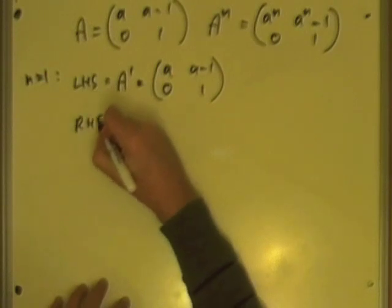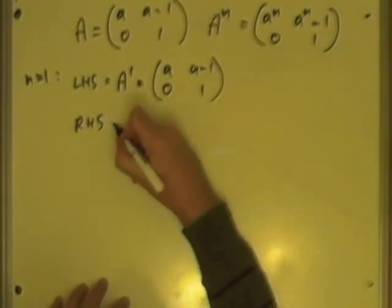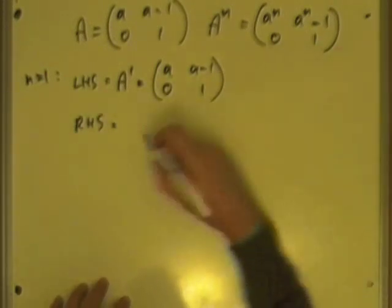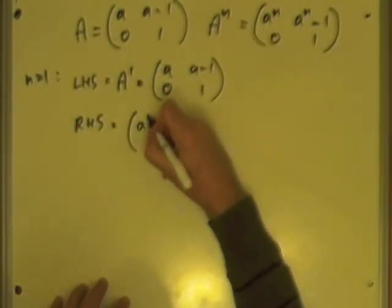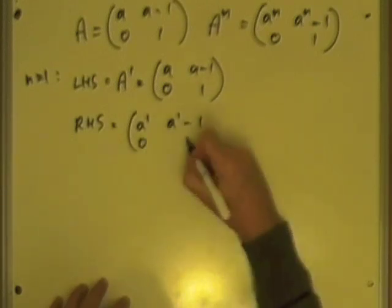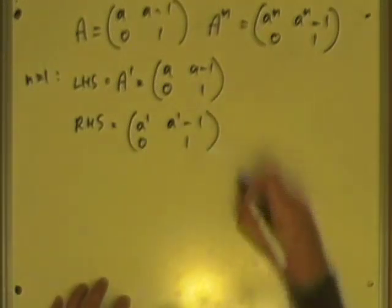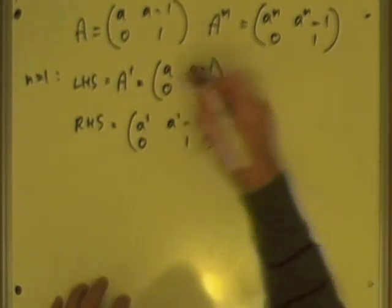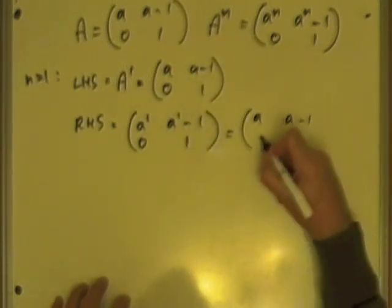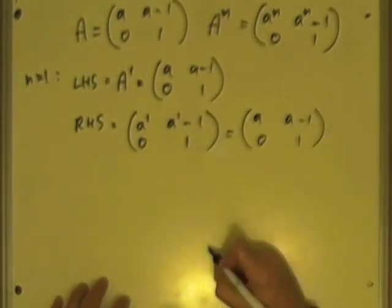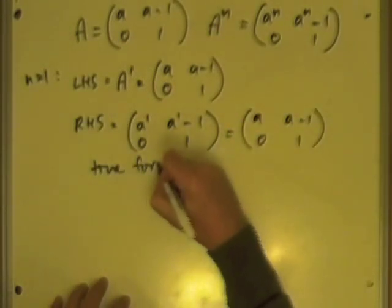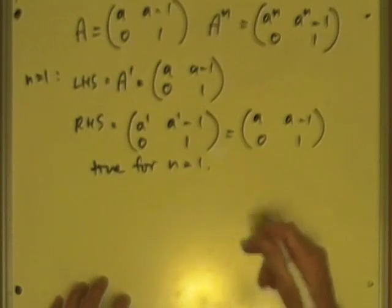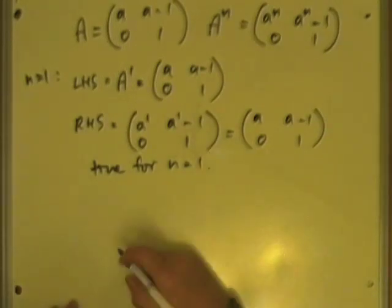Check the right-hand side, this part here. The right-hand side would be, replacing the N by 1 would be A to the 1, A to the 1 minus 1, 0, 1, which is just the same as A, A to the power of 1 is just A, A minus 1, 0, 1. They're both the same, which means it's true for N equals 1. Right, that's how I started. We're on the road, definitely want to begin with.